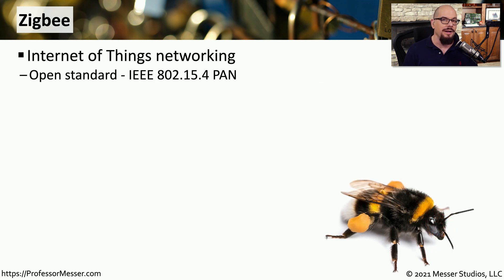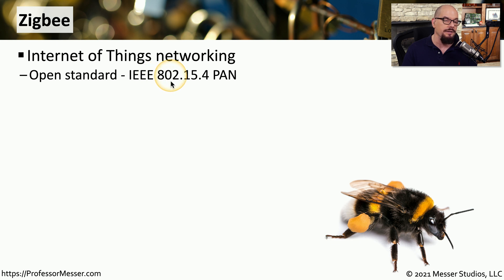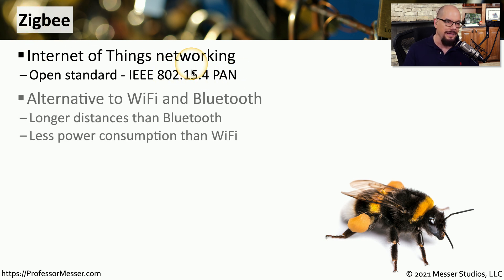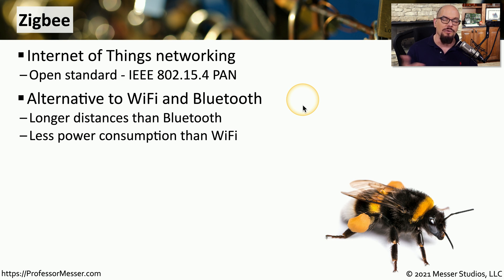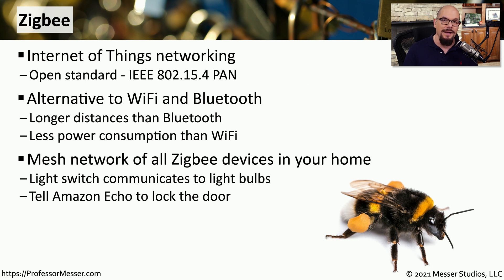You may notice that Internet of Things devices in your home are not connecting using a wire. They're communicating over wireless networks, and very commonly using a standard called ZigBee. This is an IEEE standard, specifically 802.15.4 personal area network. This is an alternative to Wi-Fi and different from Bluetooth — it's a way to communicate with IoT devices over longer distances using less power. ZigBee also allows all of your IoT devices to create a meshed network.